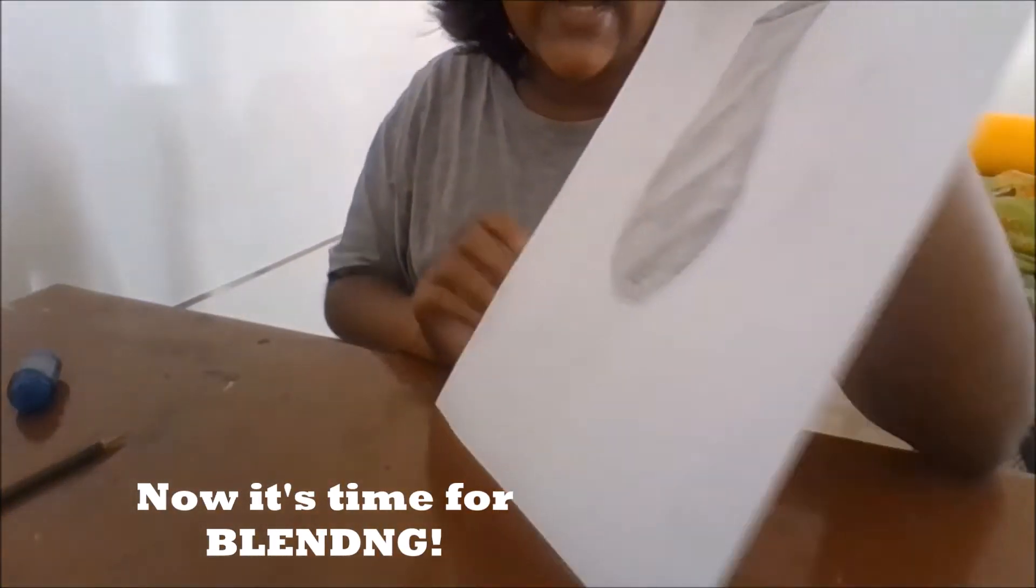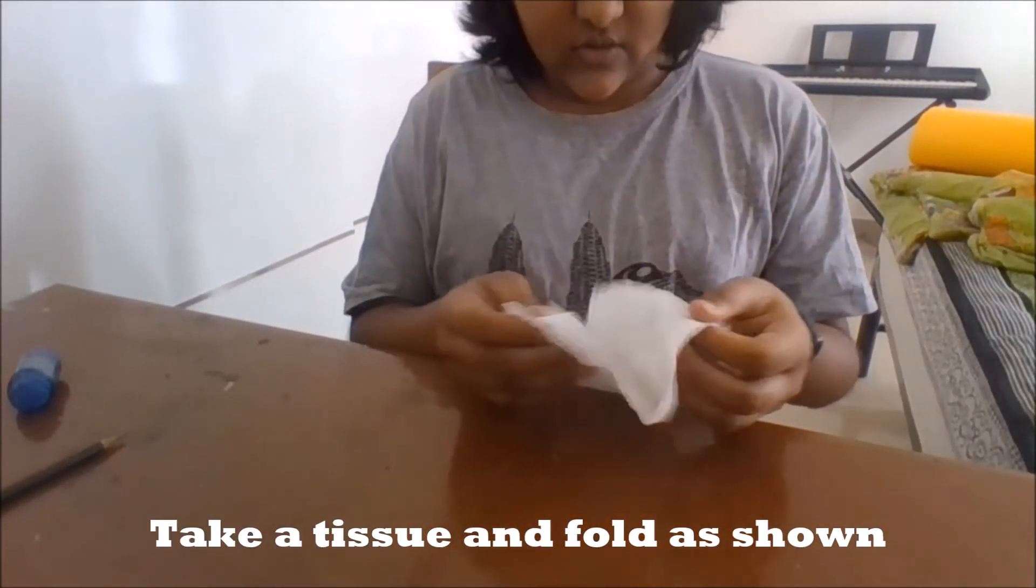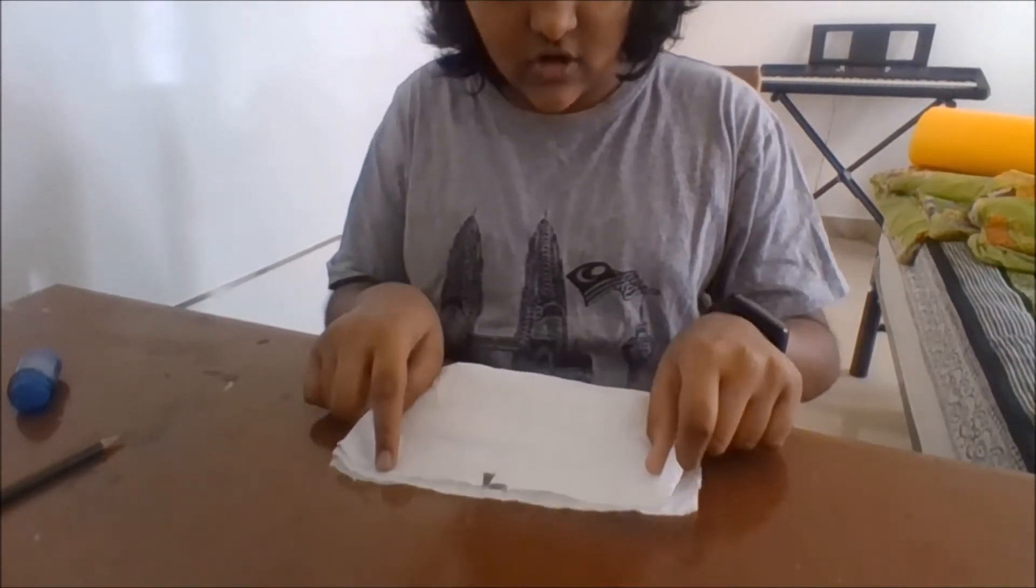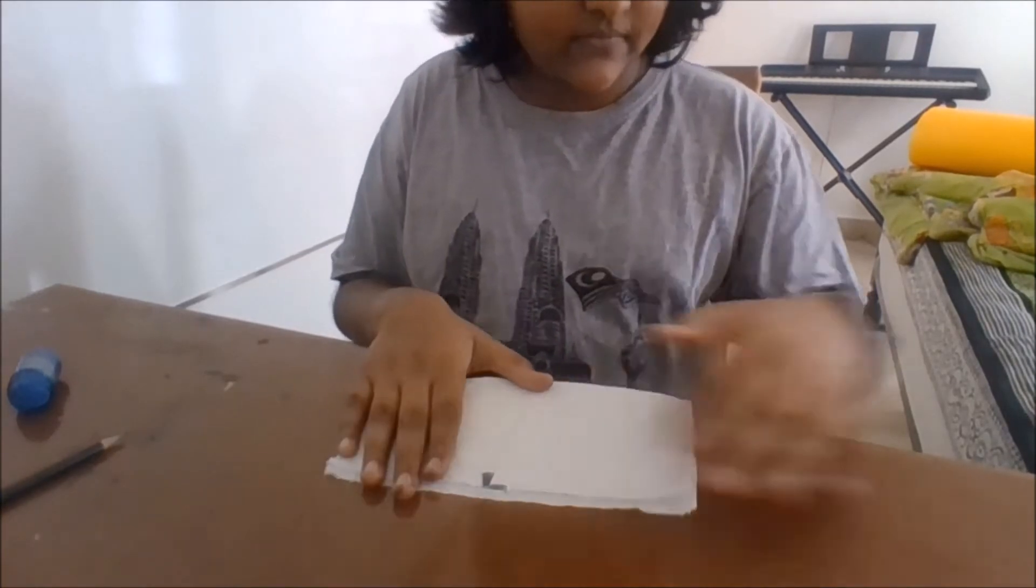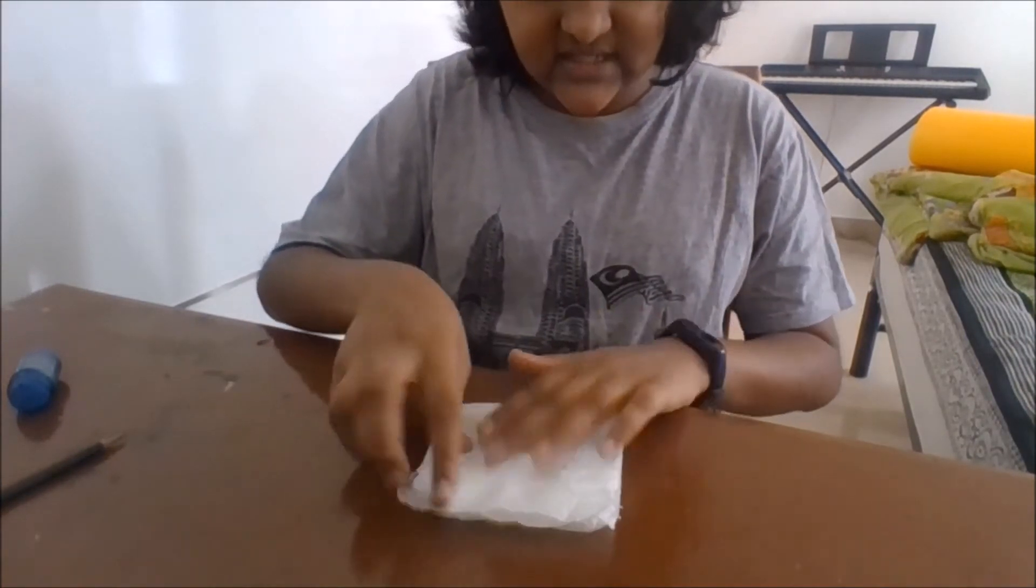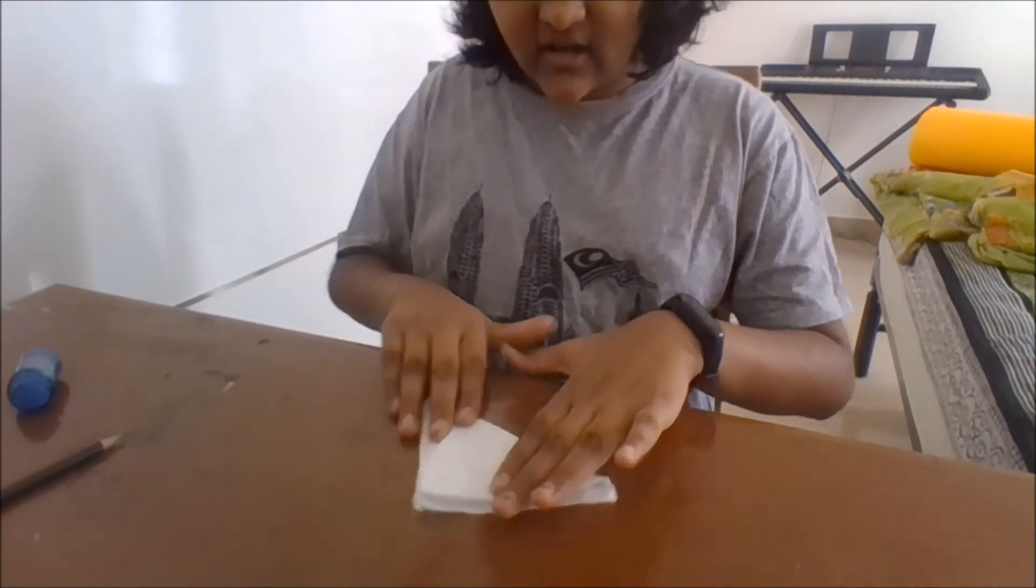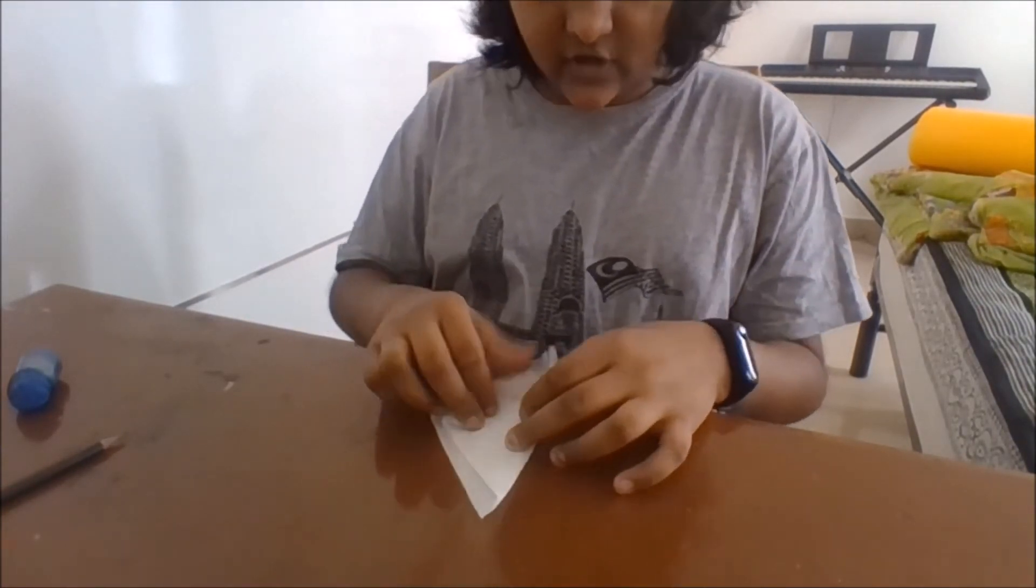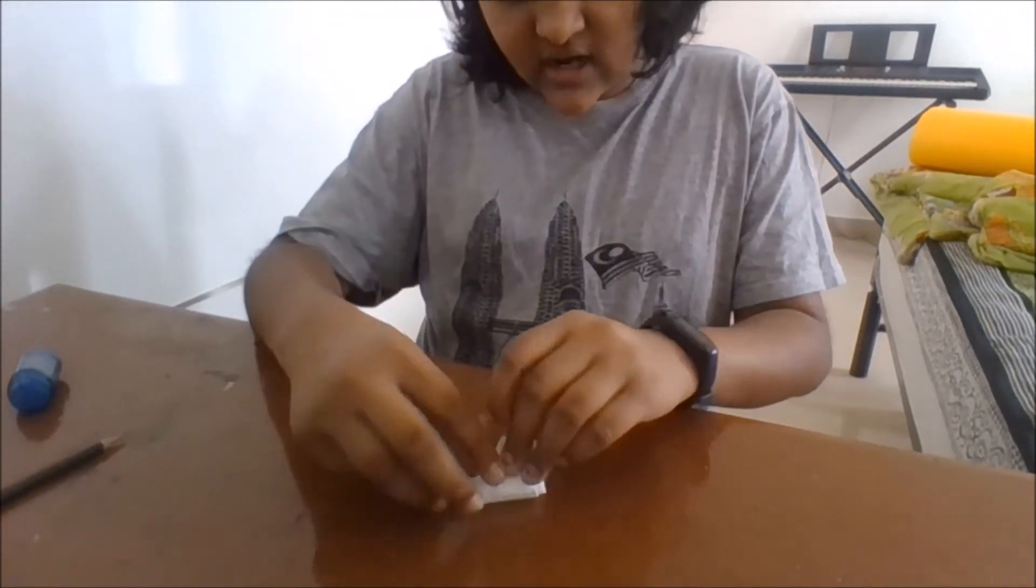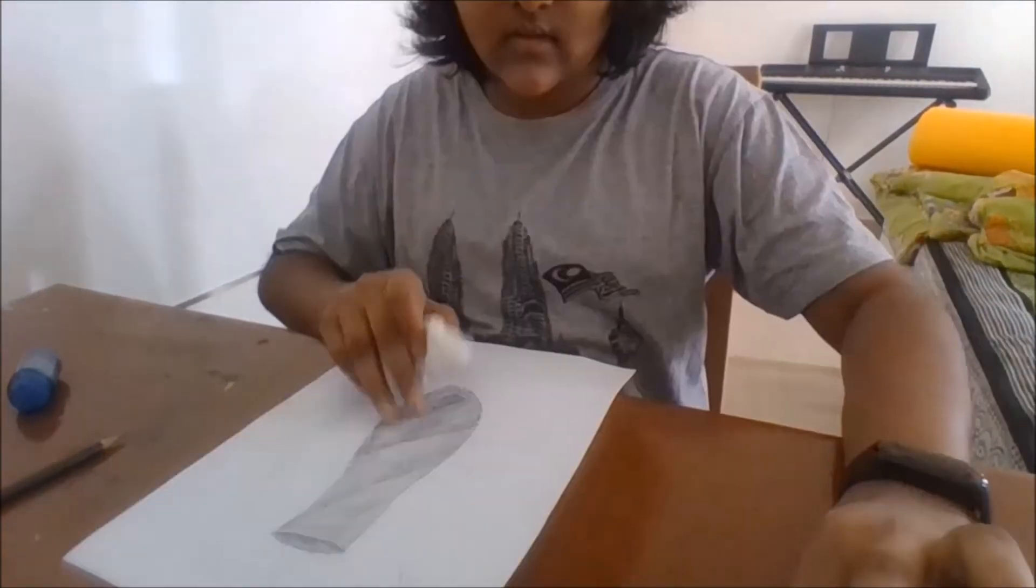Now it is time for the blending process. You want to keep your drawing aside and take the tissue. You want to fold the tissue to form a rectangle. Now you want to fold the tissue again to make a square like shown. Now fold it again to make a triangle. Now fold it again to make a right angle triangle. Take the bigger side of the right angle triangle and fold it in half. Now we have a towel-like shape to use for blending.